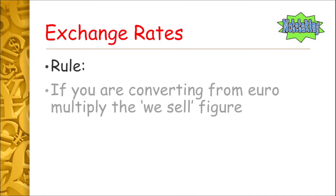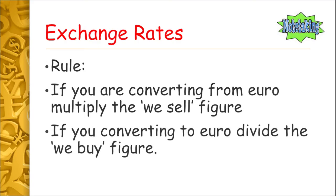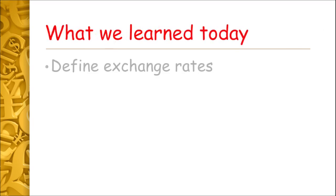The golden rule for these calculations is quite simple: if you're converting from euro, multiply by the 'we sell' figure. If you're converting to euro, divide by the 'we buy' figure. That is your golden rule for currency conversion.